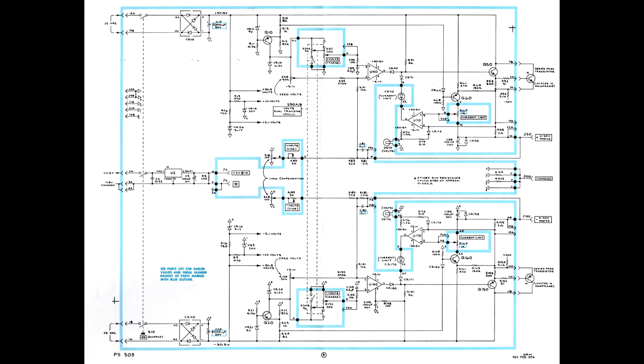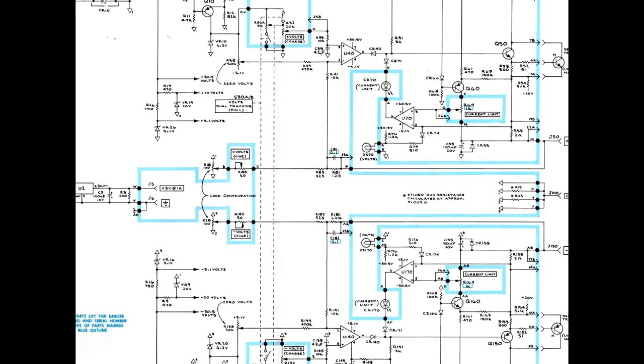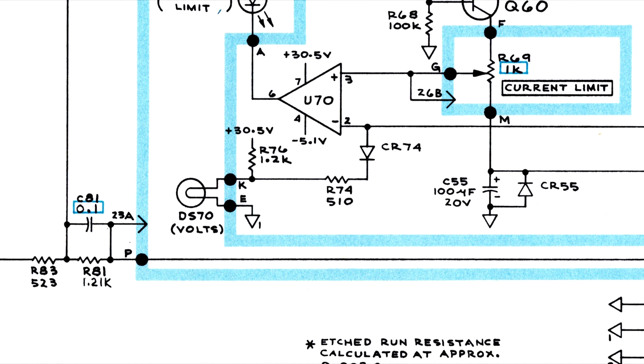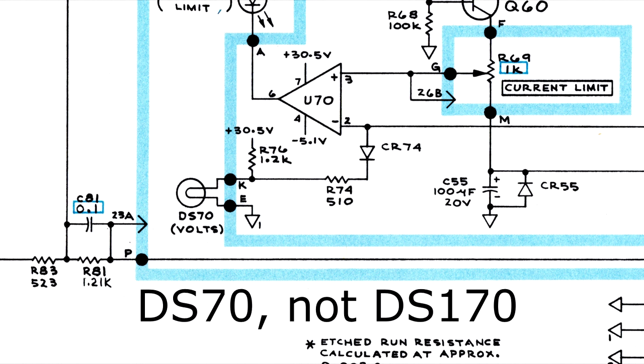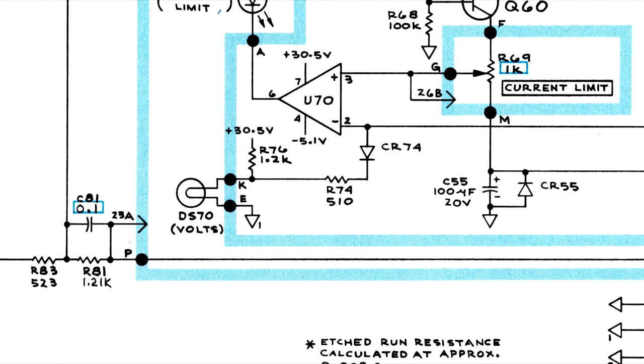The output indicator lamp, DS170 here, is adjacent to the current limit circuit, but is not part of the circuit. These incandescent lamps are subject to burnout and can be replaced by LEDs with changes in the current limiting resistors.